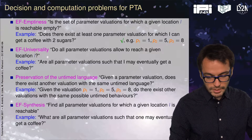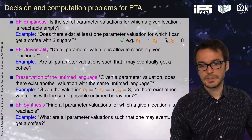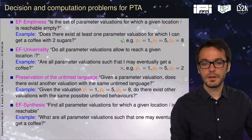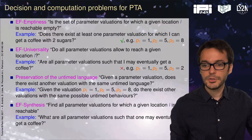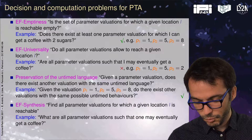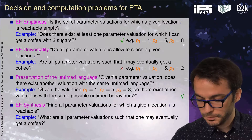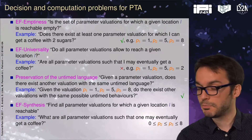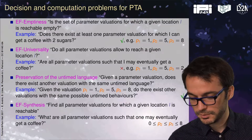For EF emptiness: does there exist at least one valuation for which I can get a coffee? Yes, this one. For universality: are all parameter valuations such that one may eventually get a coffee? Actually no — this one is a counterexample; I cannot get a coffee with this valuation. For the third problem, there exist other valuations. And for the last one — all valuations for which we can get a coffee — this is probably the most interesting question: all valuations for which p3 is smaller than 8 and p3 is greater than p2.